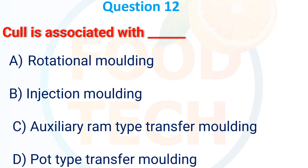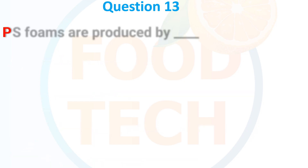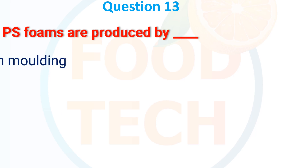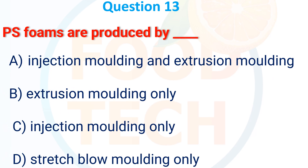100–110 degrees Celsius is associated with: (a) Rotational molding, (b) Injection molding, (c) Auxiliary ram type transfer molding, (d) Pot type transfer molding. The answer is (d) Pot type transfer molding.